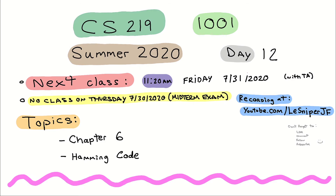Good morning everybody and welcome to another day of CS 219, day 12. Today we are going to be talking about main memory and also about error detection and correction, specifically about Hamming code. In chapter 5 we talked about cache memory and now we're going to be talking about main memory in general and more specifically about what you know as RAM memory.